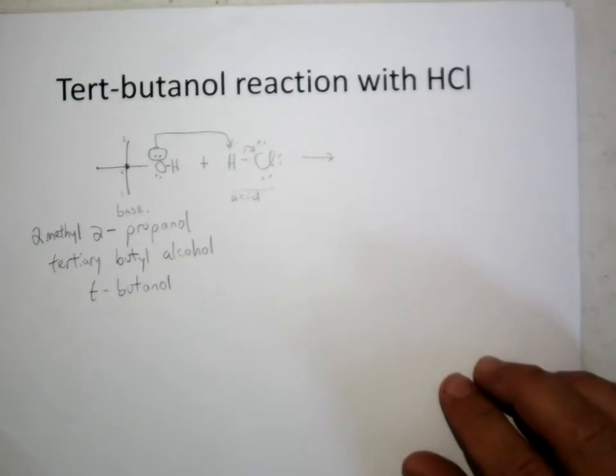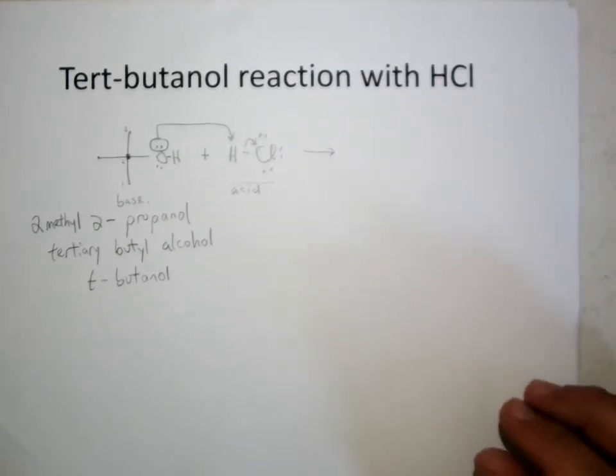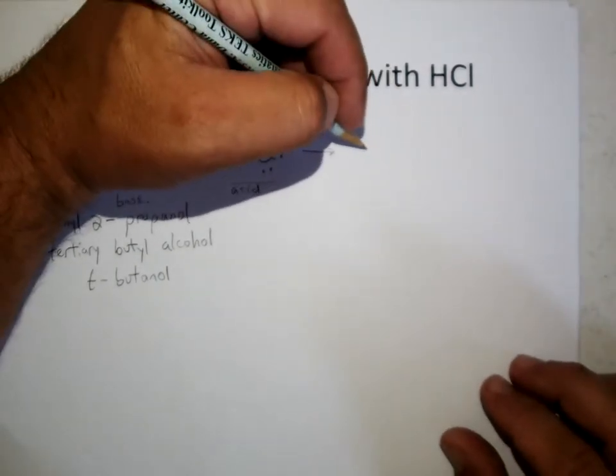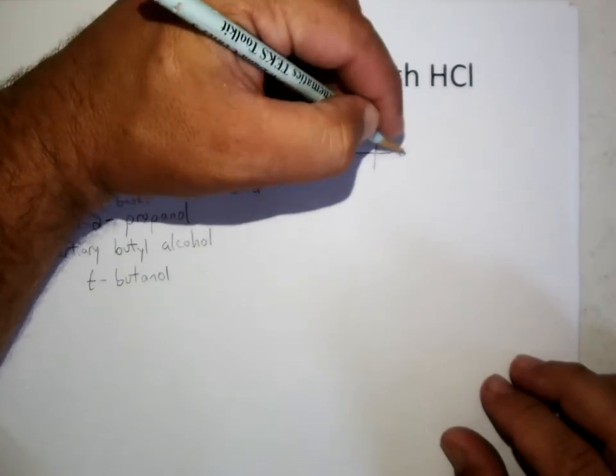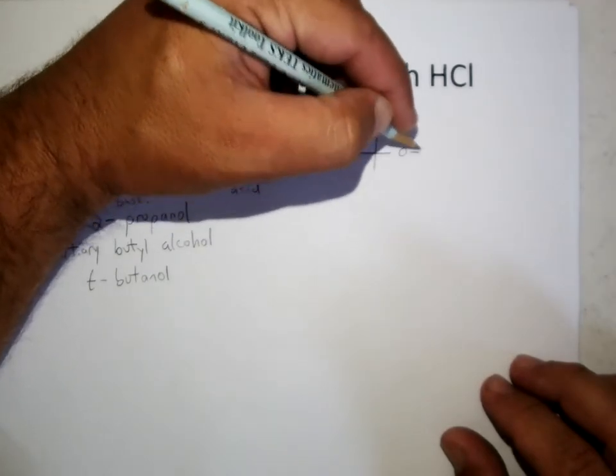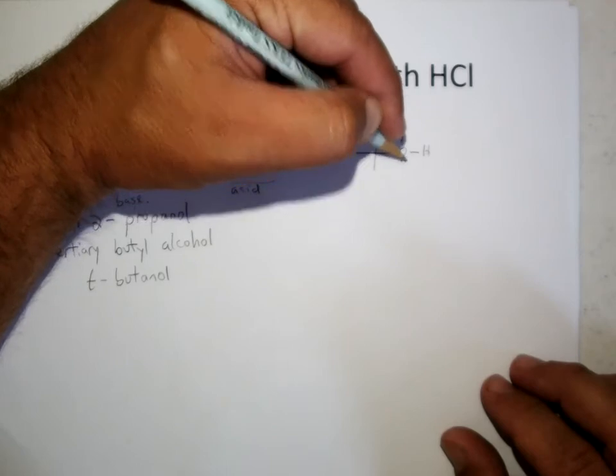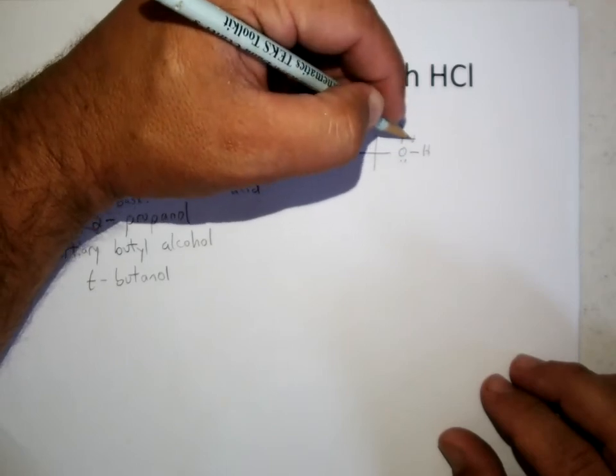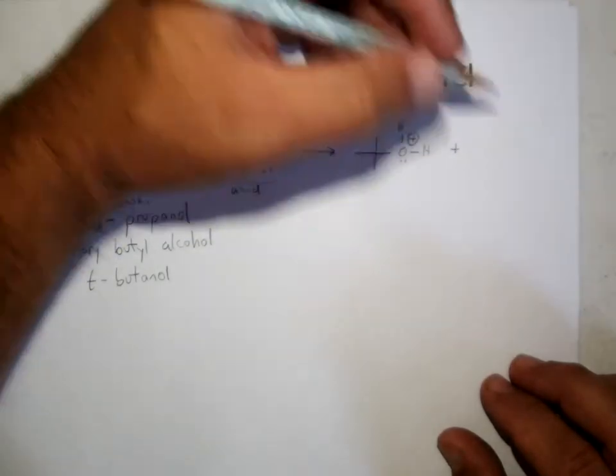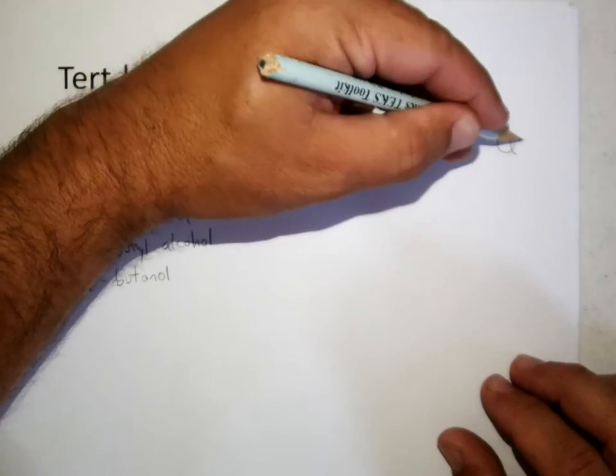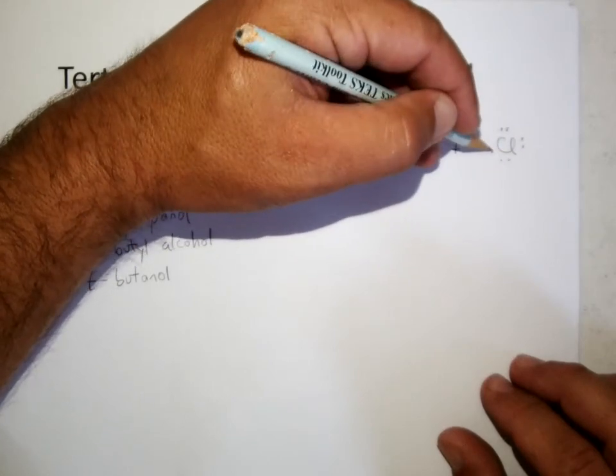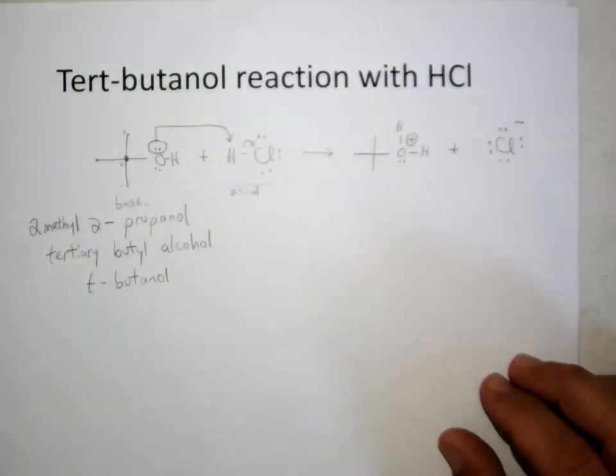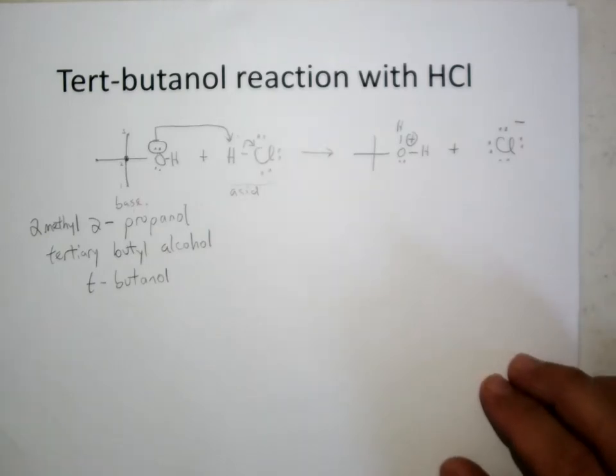So when you do that, then you end up with the protonated alcohol plus chloride. So protonated alcohol plus the chloride.